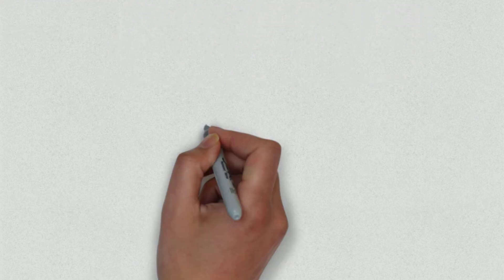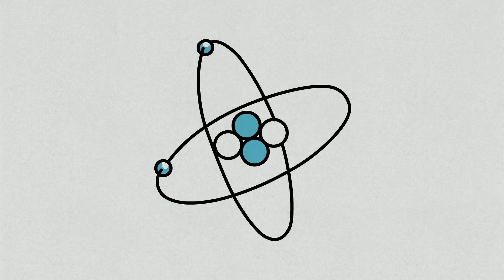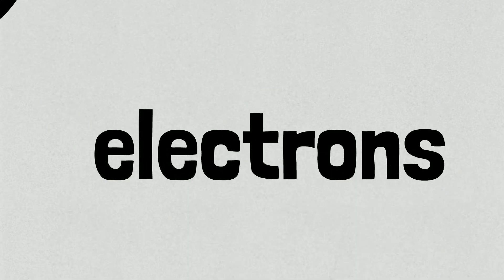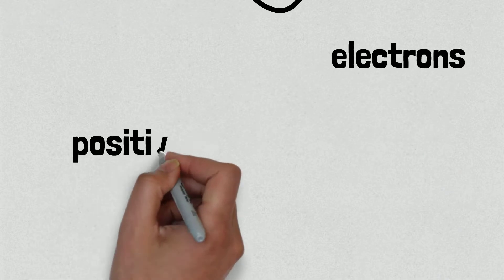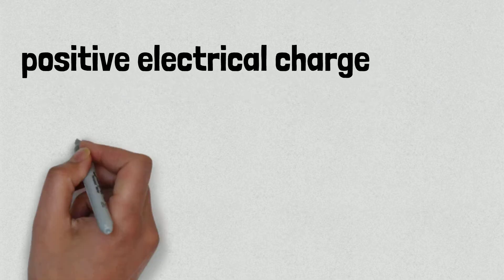Atoms are made up of various parts. The nucleus contains minute particles called protons and neutrons, and the atom's outer shell contains other particles called electrons. The nucleus carries a positive electrical charge while the electrons carry a negative electrical charge.